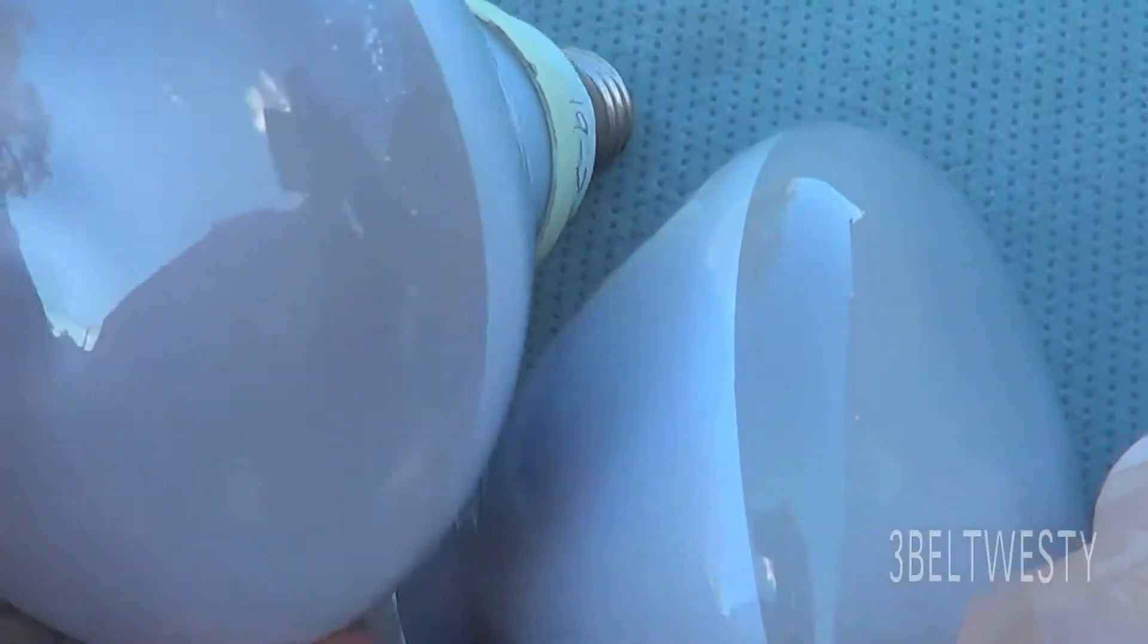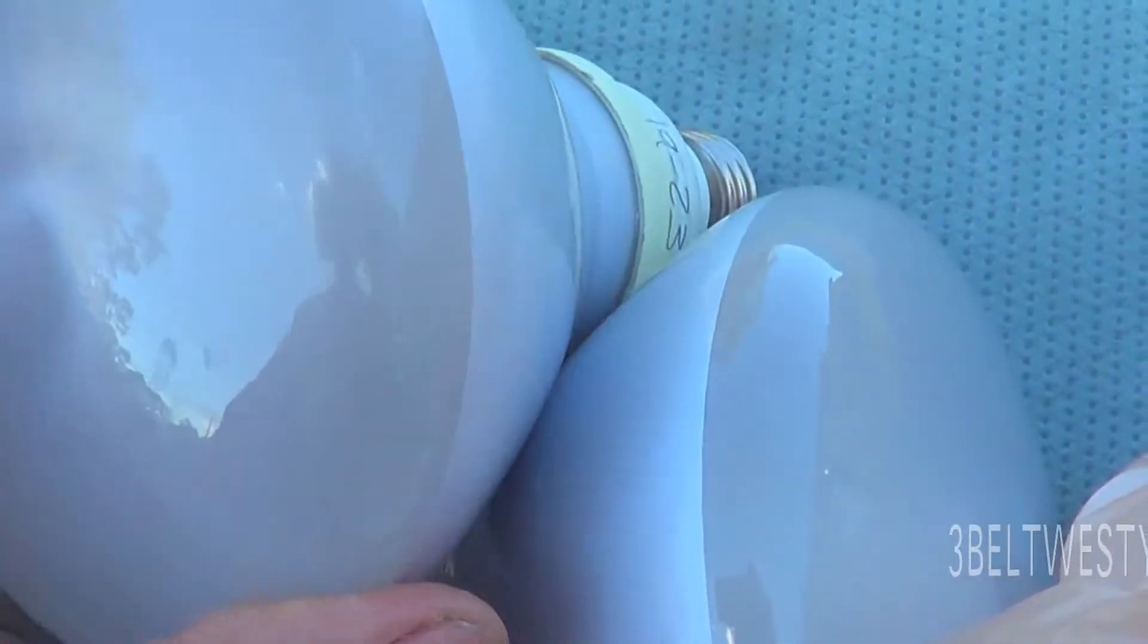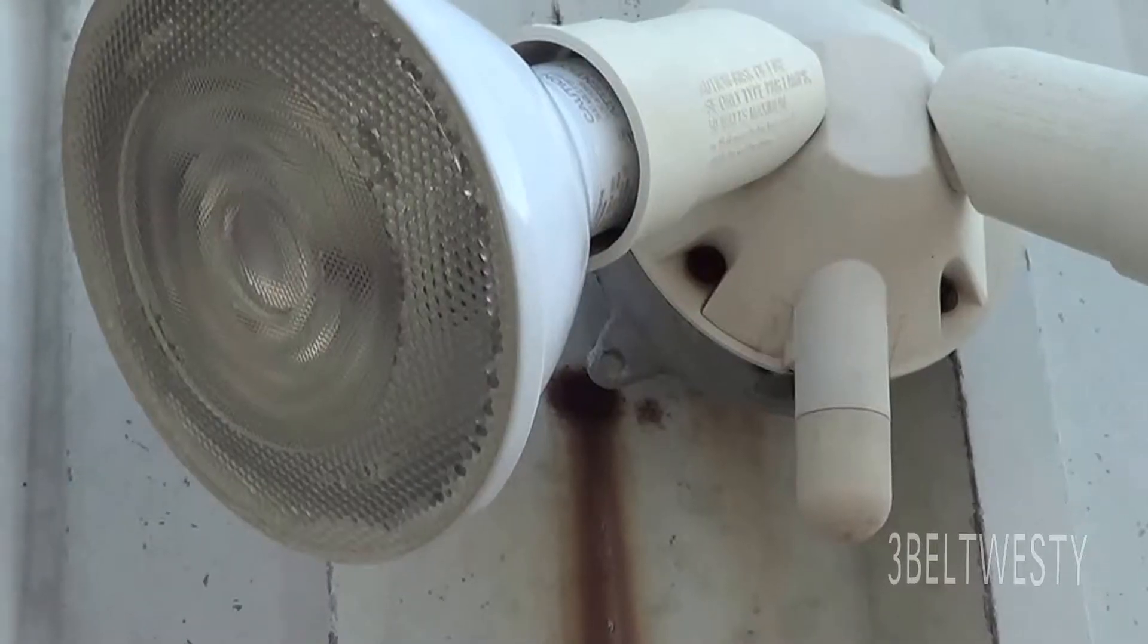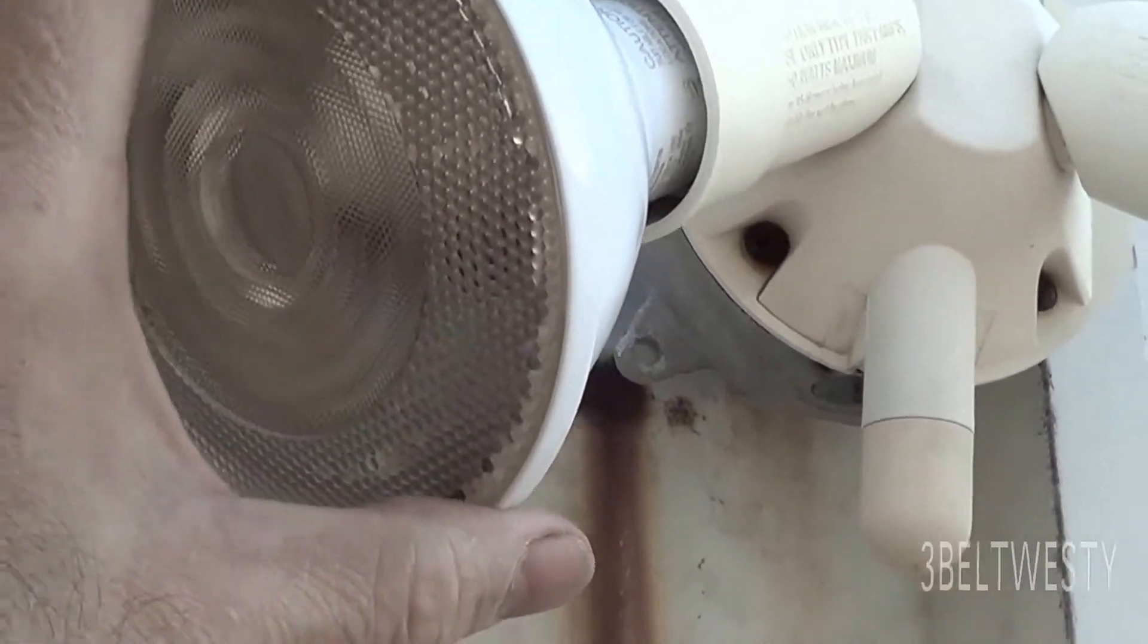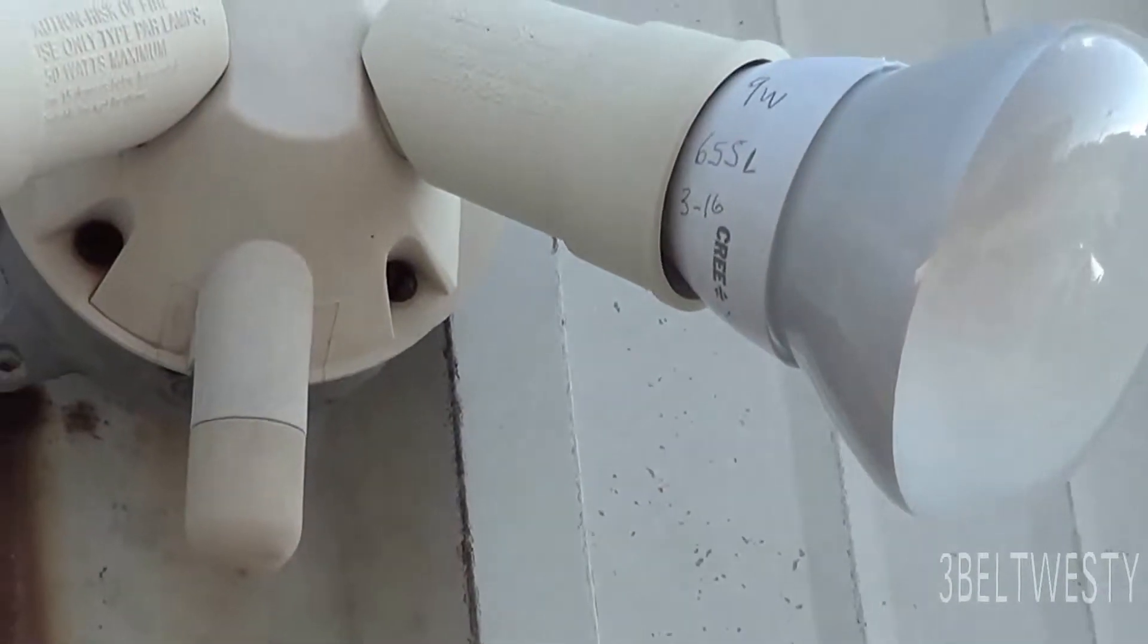Here's the old ones, the CFL, they're 23 watts. There they are installed to get the brighter one here on the left and the weaker one on the right because that faces a street light.